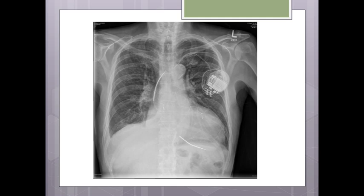An example ICD is shown implanted with a thick radio-opaque coil at the SVC–right atrium junction and another at the right ventricle — these are the shocking coils. Two coils allow shocking in multiple directions: atrium only, atrium to generator casing, ventricle to generator casing, or between the two coils.